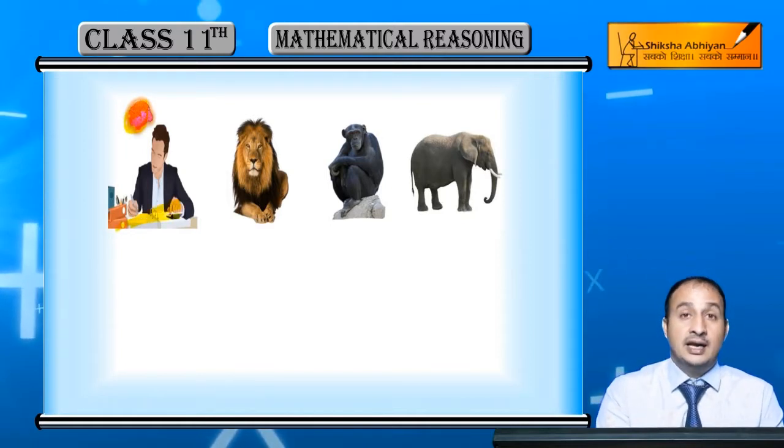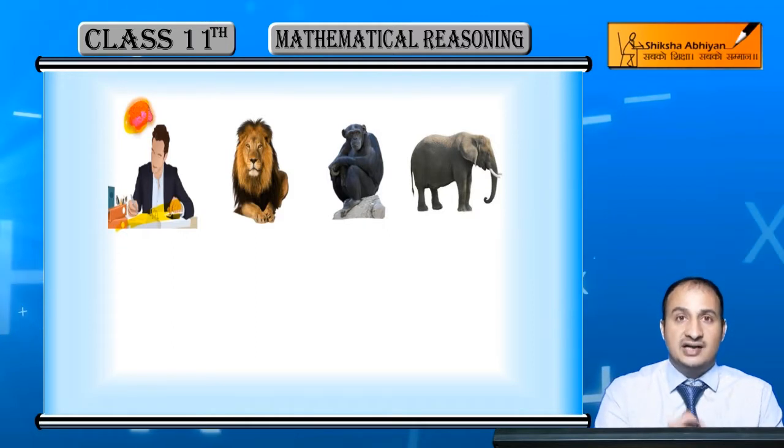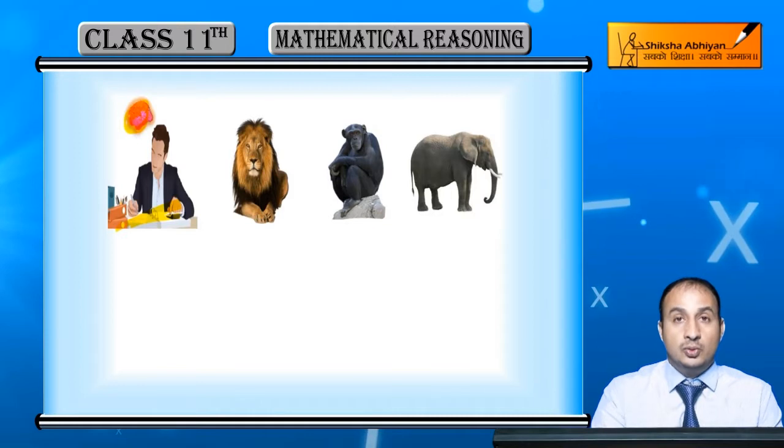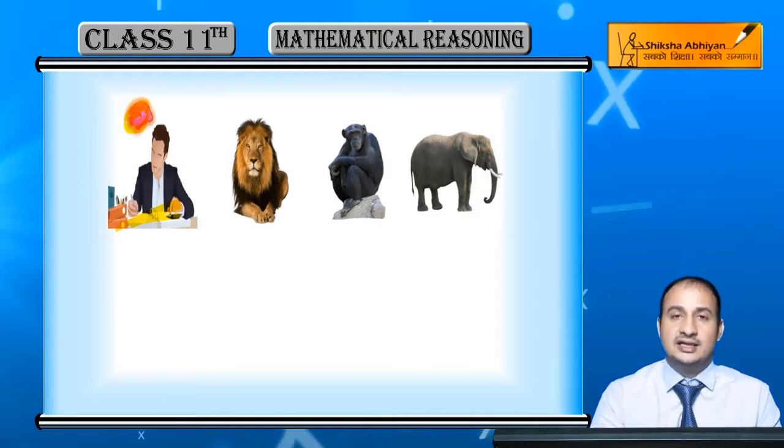Baaki logon ke paas bhi brain hai. Lekin yahan par jo hai, zyada advanced brain jo hai, saari species mein woh human ka hota hai. Ise apply karna aata hai. Woh cheez ko reason kar ke dekhta hai - ke kyun, kaise, kis liye.